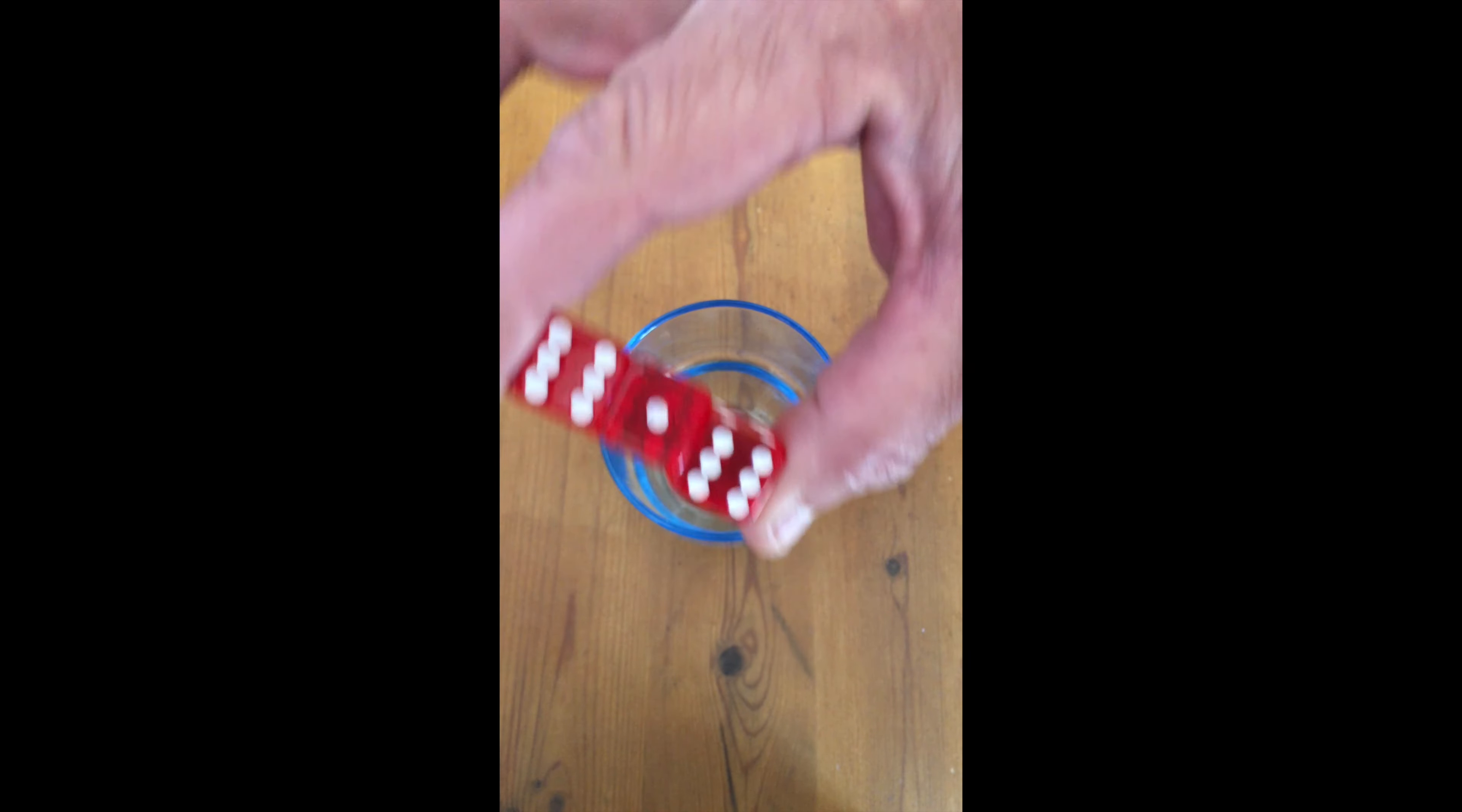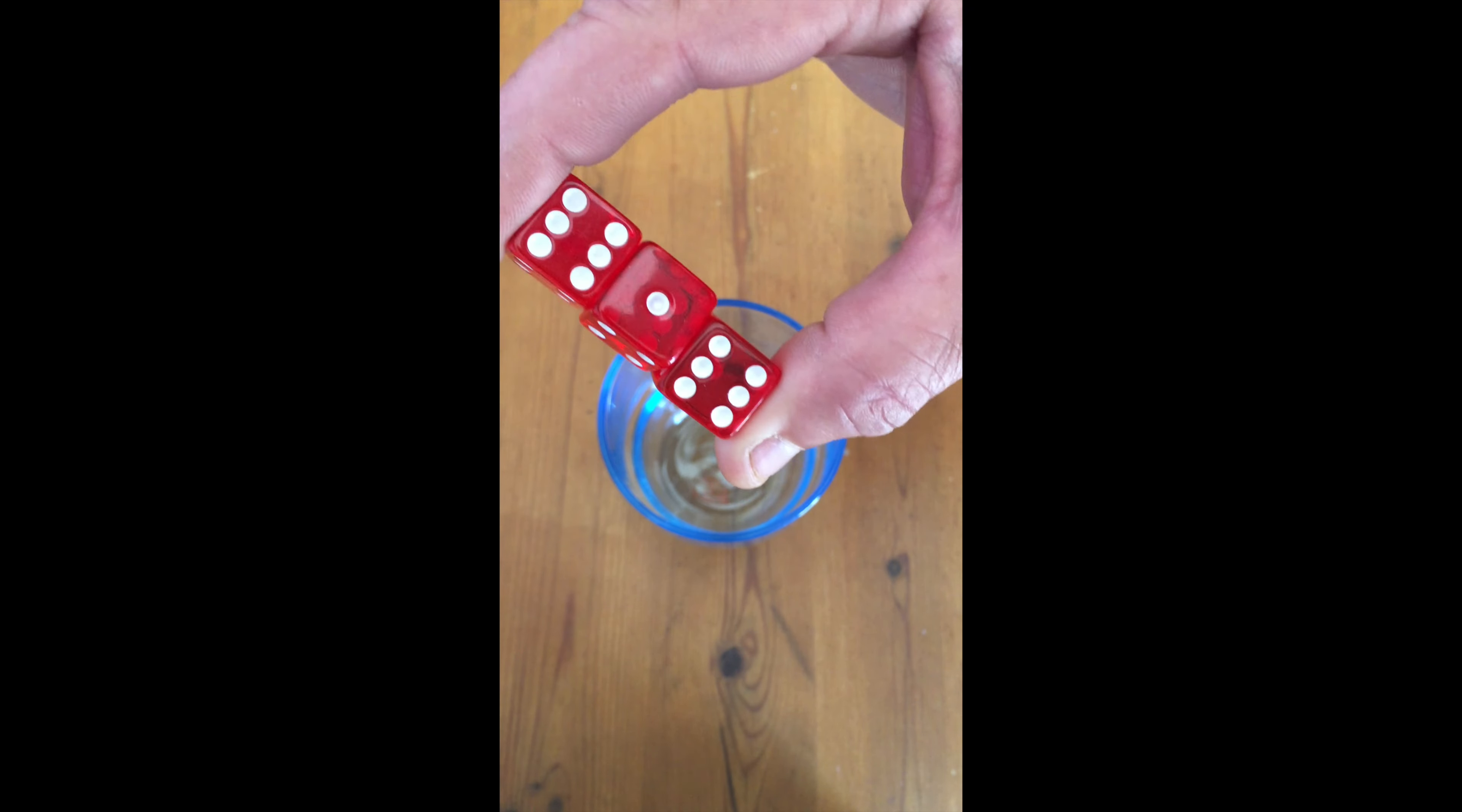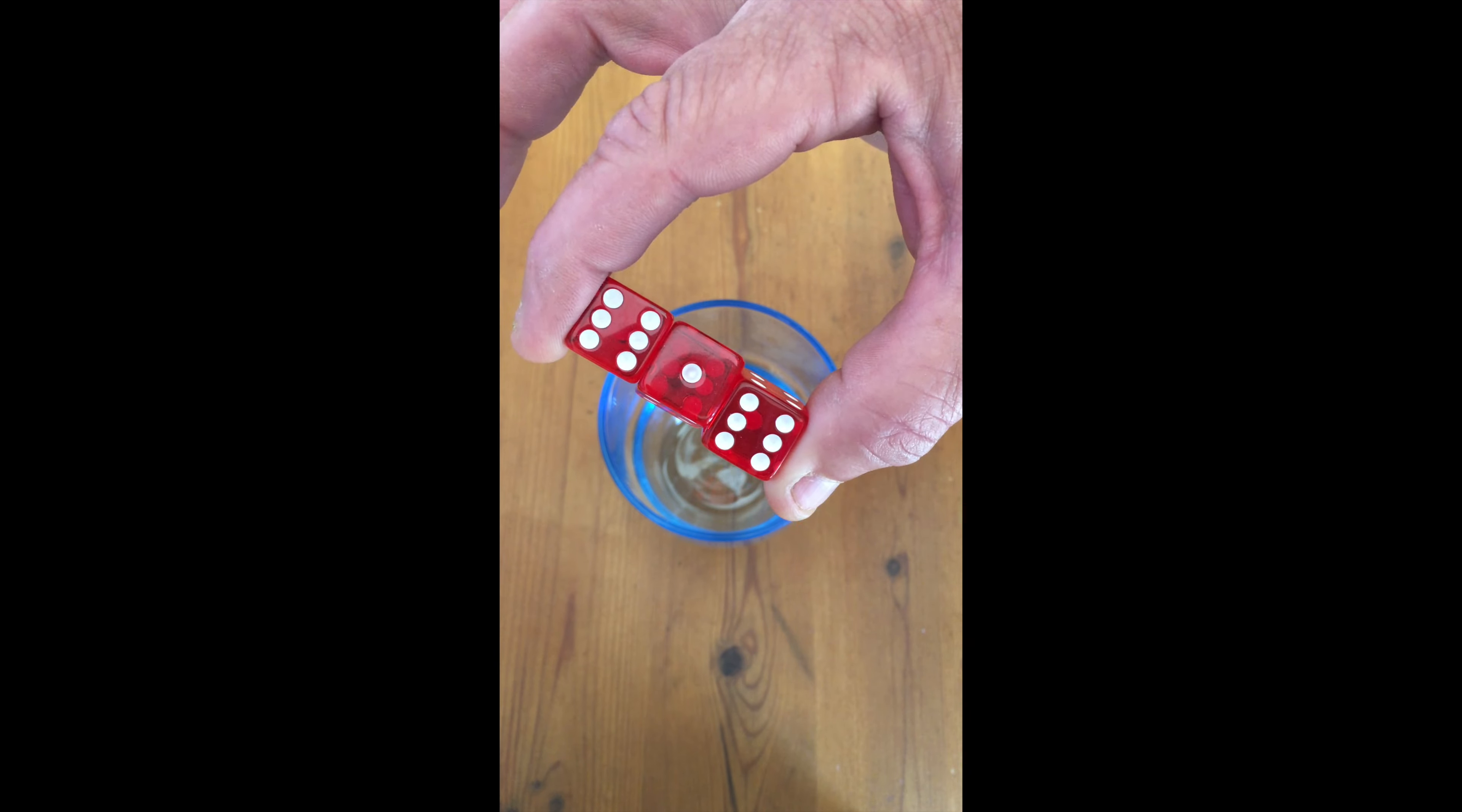Now all you say to your spectator is what you'd like them to do is only using two fingers, holding them like this. They have to try and get the number one, or the center dice, into the glass without dropping the other two.